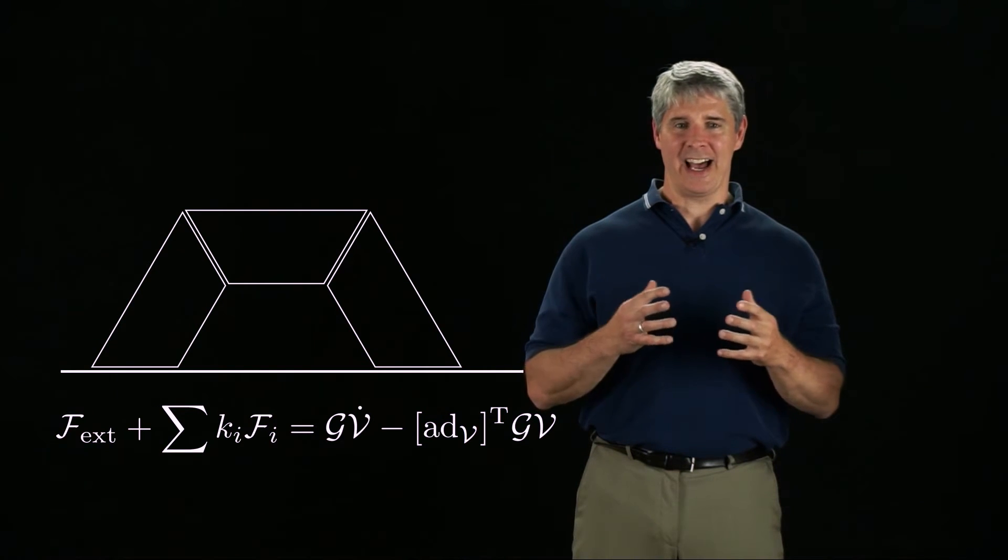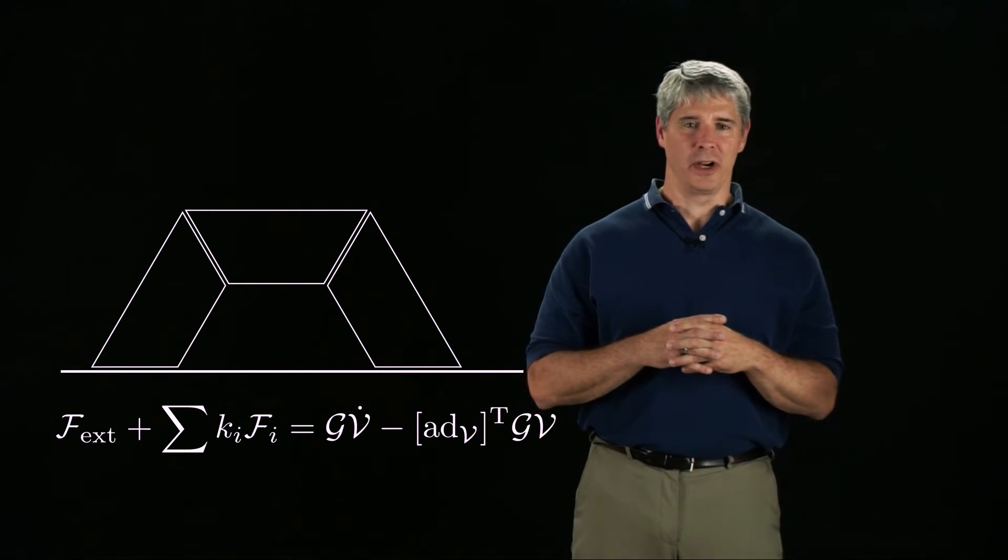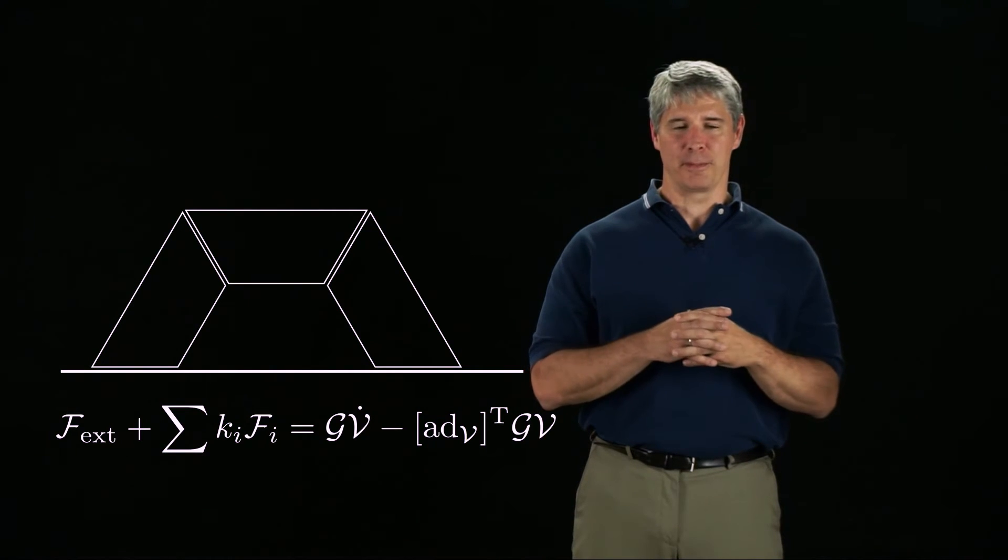If any of the coefficients ki has to become negative to satisfy the equations, then the assembly must be glued together to keep from collapsing.